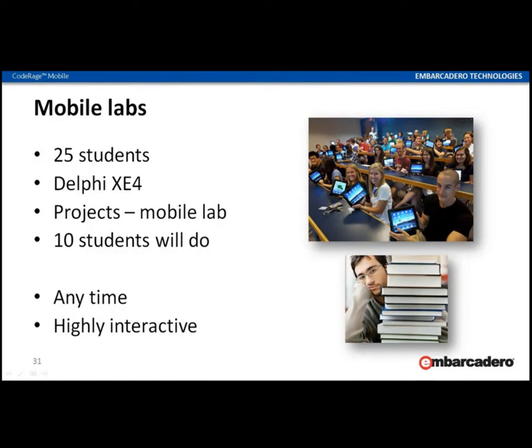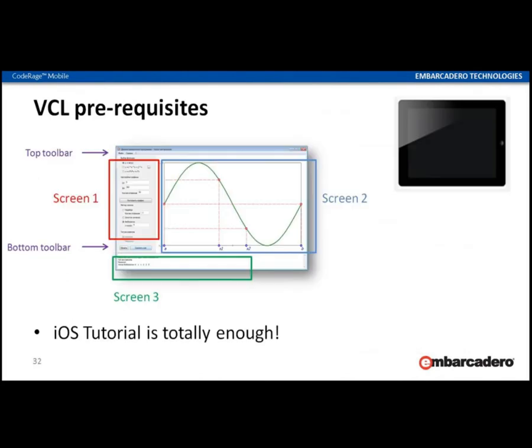Students know Delphi, in contrast to Objective-C. At least 10 students will succeed — one semester, 10 great labs, highly interactive, which can be done anytime and everywhere. You need only to teach them how to convert a typical VCL interface into a mobile layout: take the main menu to the top toolbar and bottom buttons to the bottom toolbar. The left control panel becomes screen 1, the main chart area becomes screen 2, and the bottom block panel becomes screen 3. Even VCL projects can be easily converted.